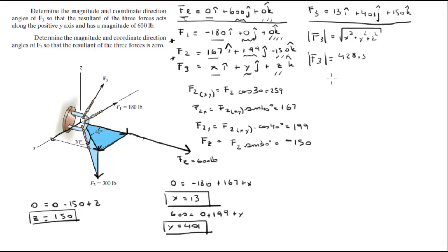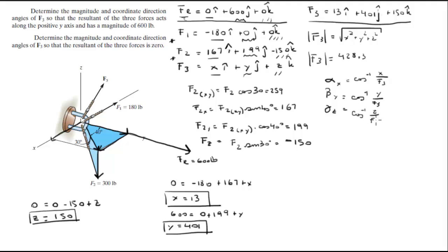For the direction angles — cosine inverse of x over F3, cosine inverse of y over F3, and cosine inverse of z over F3 — these three angles come out to be 88.26 degrees, 20.57 degrees, and 69.5 degrees.